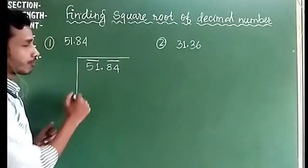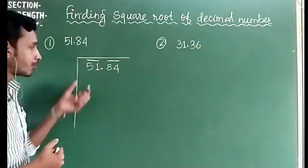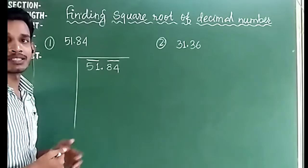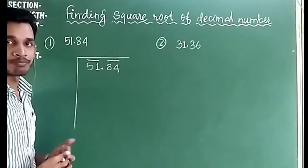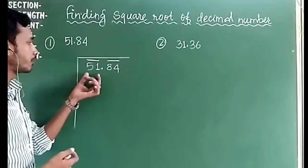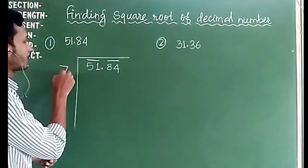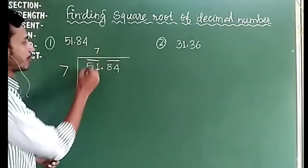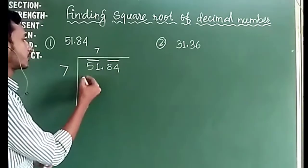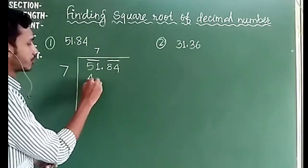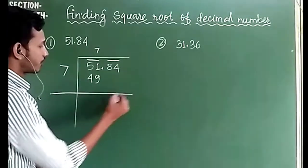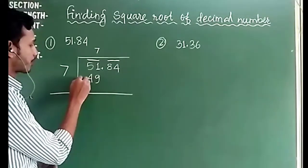Now for 51, we need to find the largest square number less than 51. That number is 7, because 7×7 = 49. We subtract 49 from 51 and get a remainder of 2.